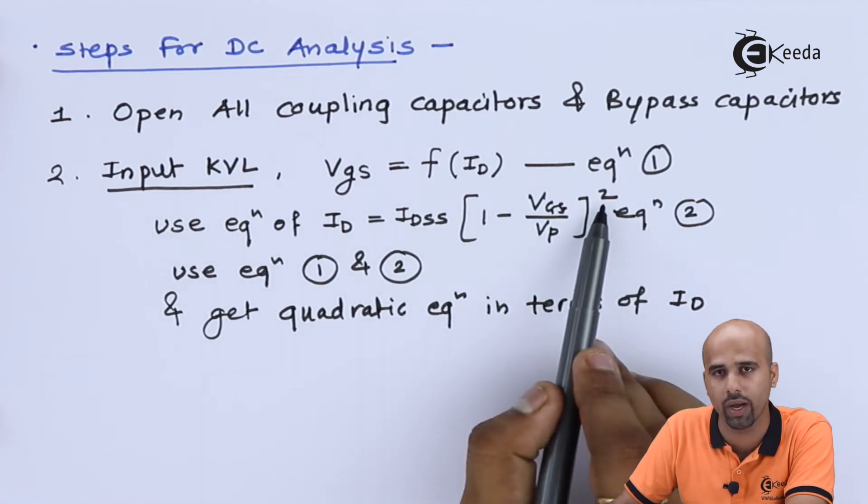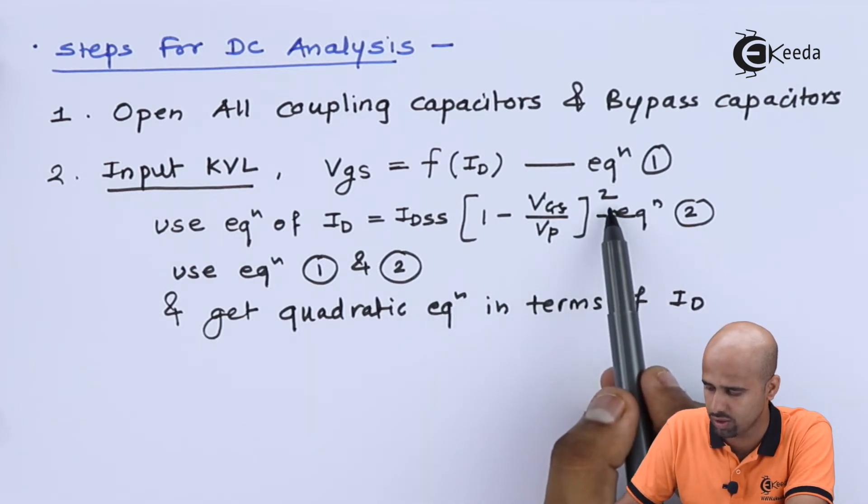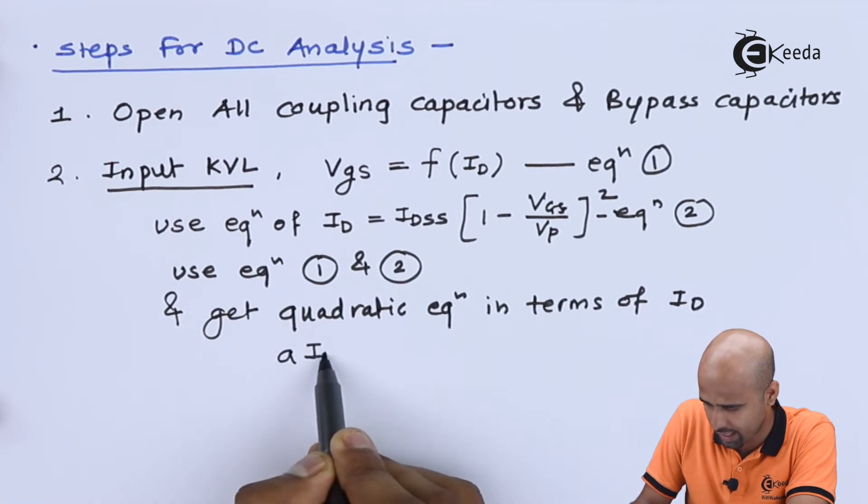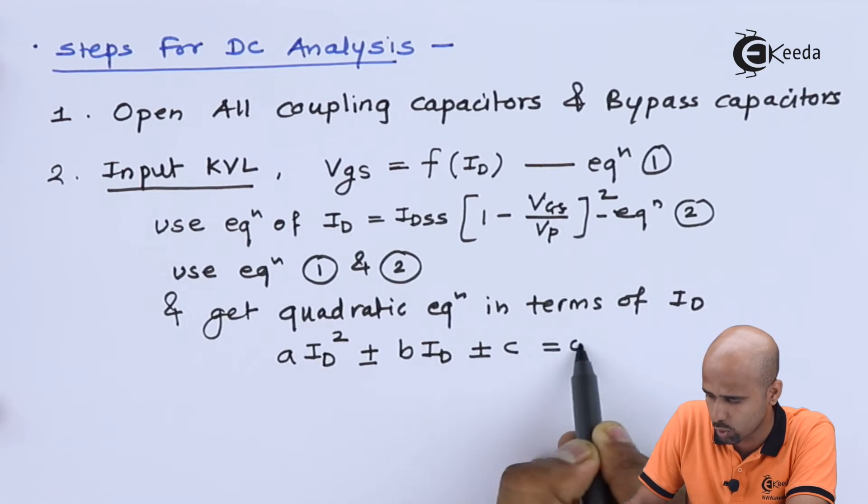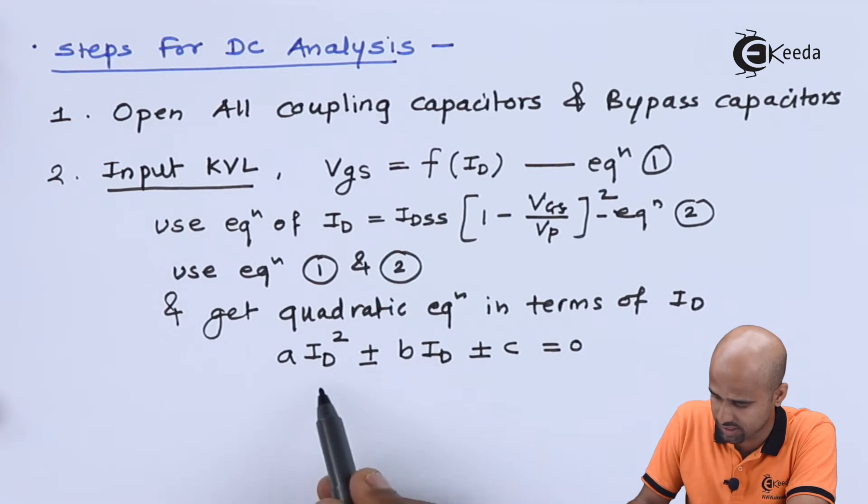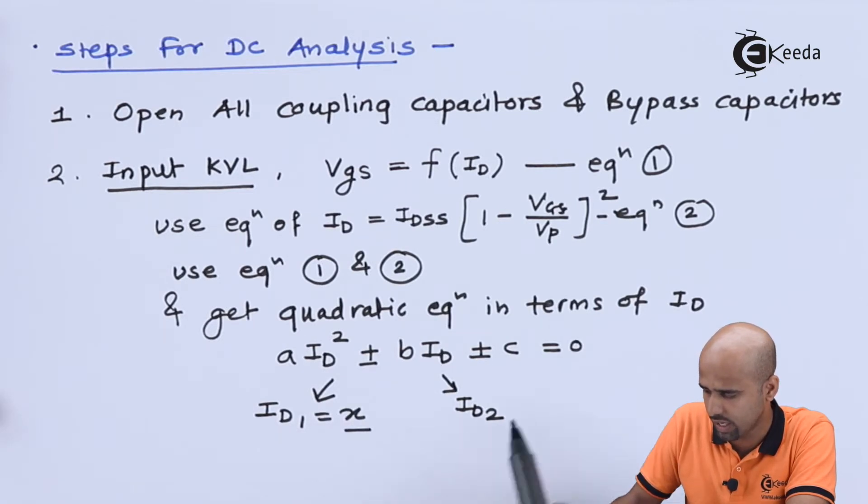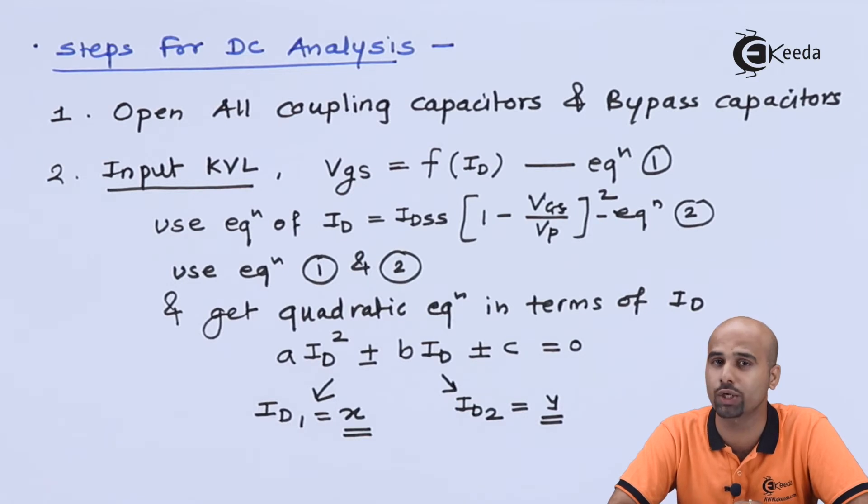So here, as this is square law device, we are getting the equation in the form of polynomials of degree 2. So we will be getting something multiplied by A multiplied by ID square plus or minus B multiplied by ID plus or minus C is equal to 0. This is done. Now from this we will be getting two equations, ID1 and ID2. If ID1 is X and ID2 is Y, there will be a confusion that which value is correct. Then according to the characteristics, we will draw the characteristics and then we will get to know that whether this ID is valid or not.